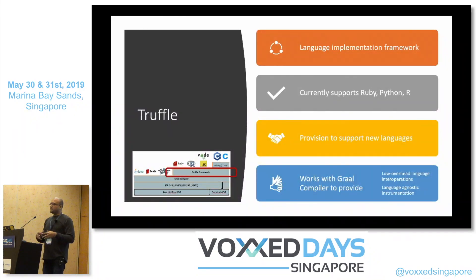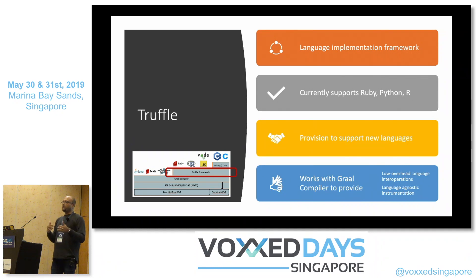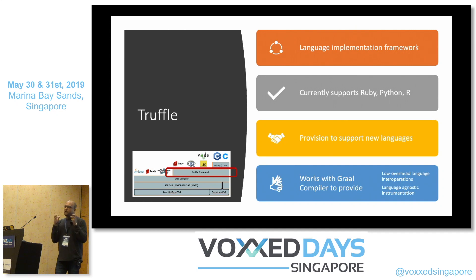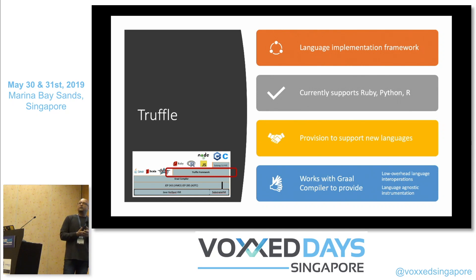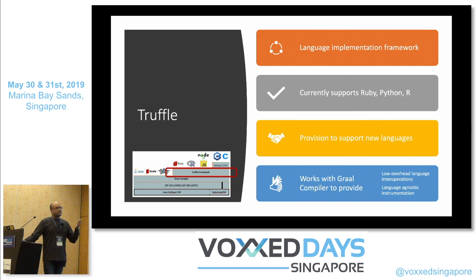Truffle is the language implementation framework provided by GraalVM. It sits on top of the Graal compiler and interprets your languages using abstract syntax trees (AST). The Graal compiler is optimized to work with Truffle-based interpretations — it performs partial evaluation of these abstract syntax trees, and the result is pretty much on par with standard runtimes. Currently, the Truffle implementation supports Ruby, R, Python, Node, and LLVM, and has nice documentation if you want to provision a new language.